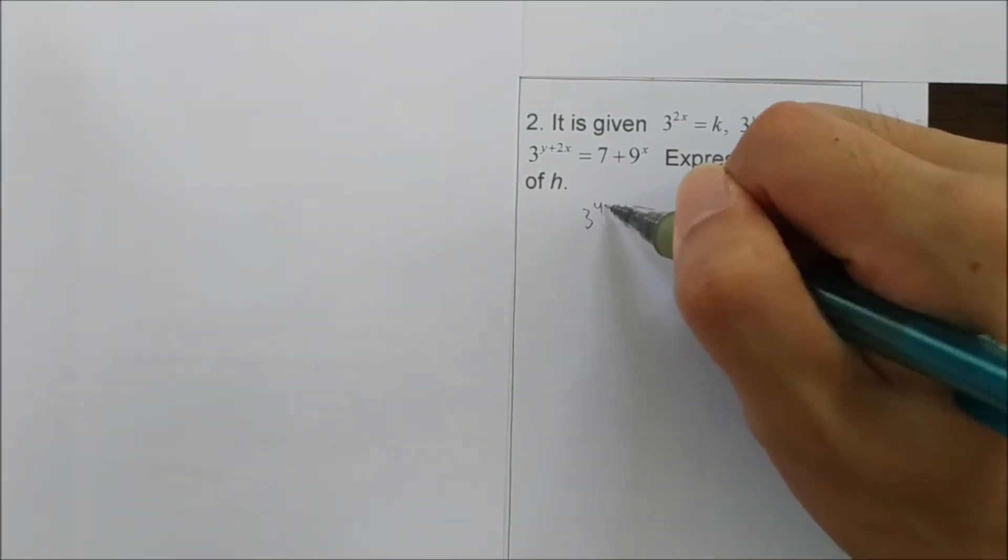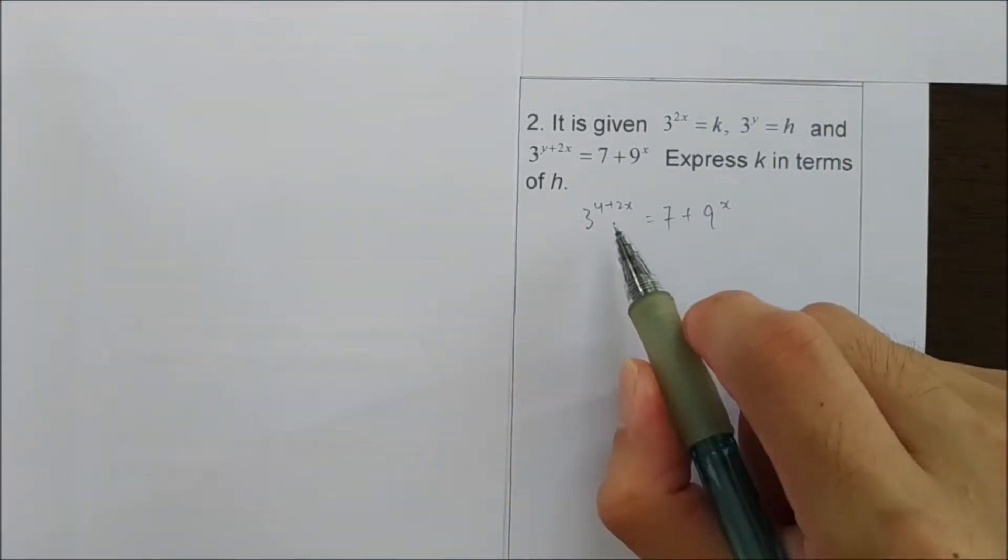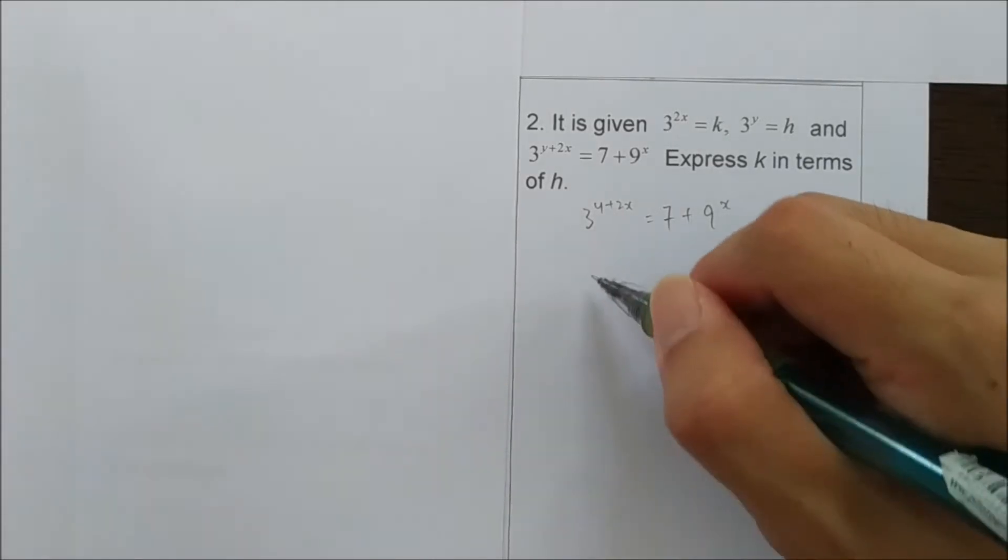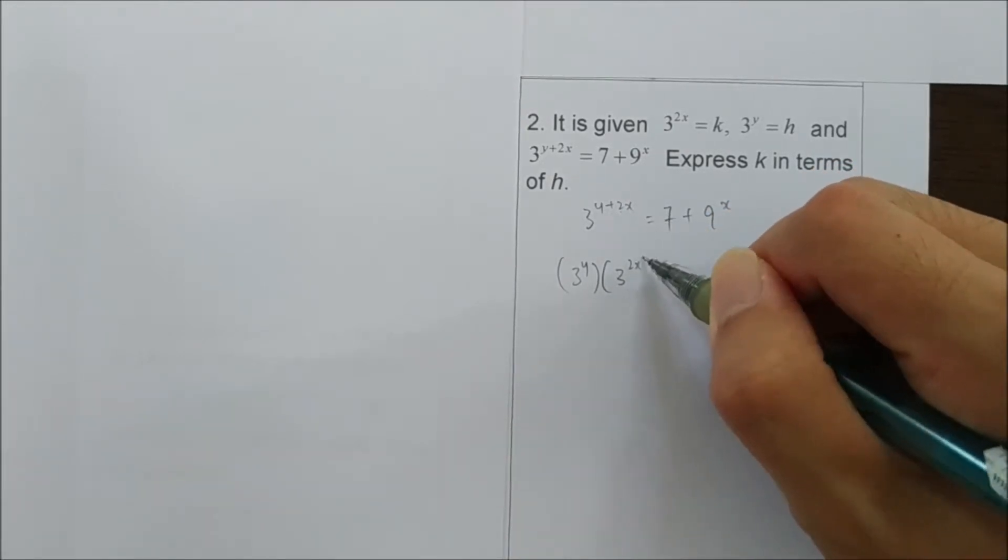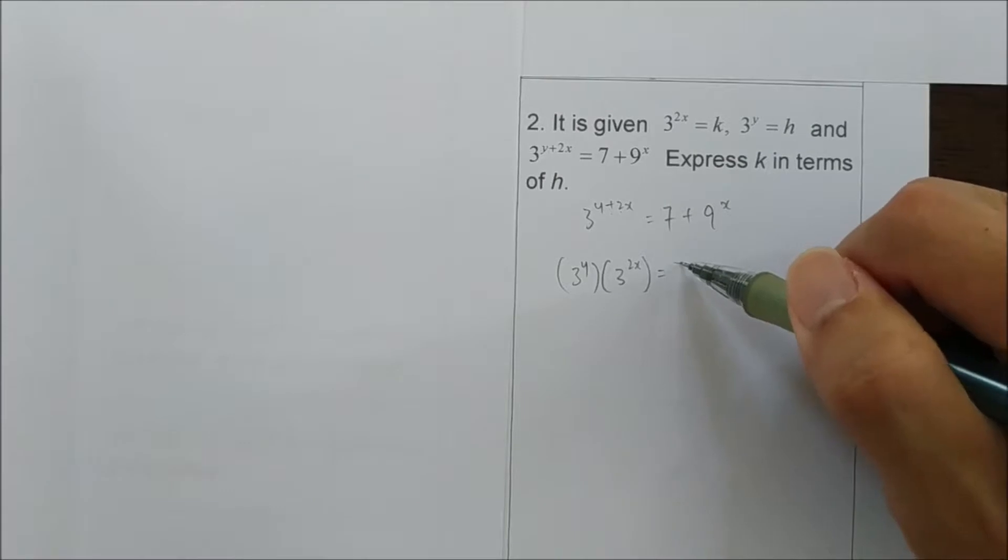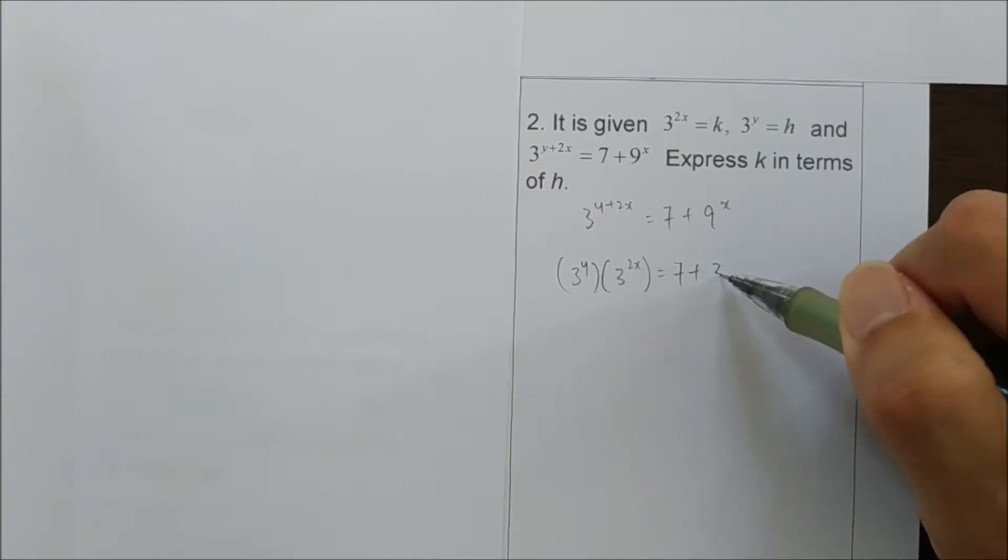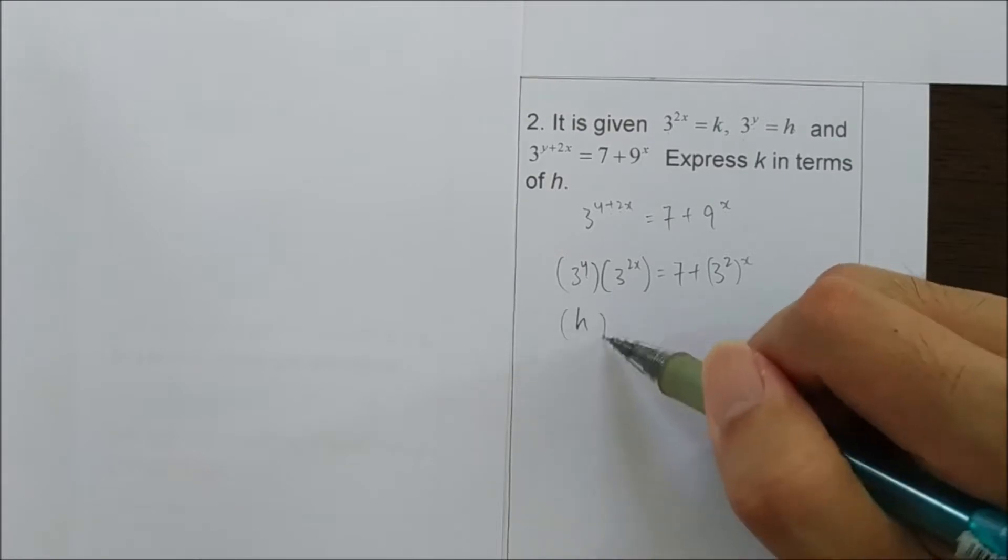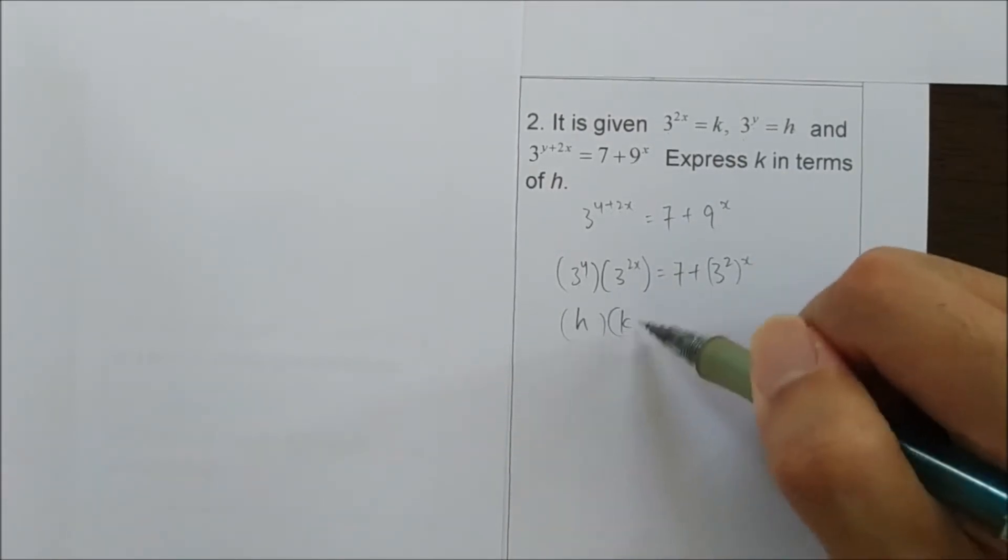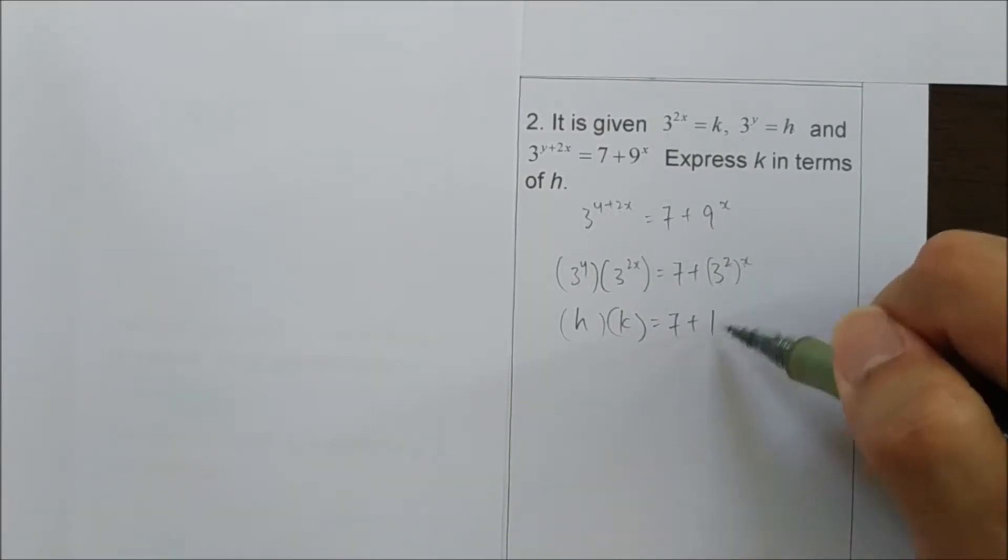So I rewrite this. By using the law of indices, we can change this to 3 to the power of y multiplied by 3 to the power of 2x minus 9 equals 7. And since it involves the base 3 here, we try to change the 9 into base 3, which is 3 to the power of 2. Given 3^y is h and given 3 to the power of 2x is k, and here we have 3 to the power of 2x which is also k, so we get this.